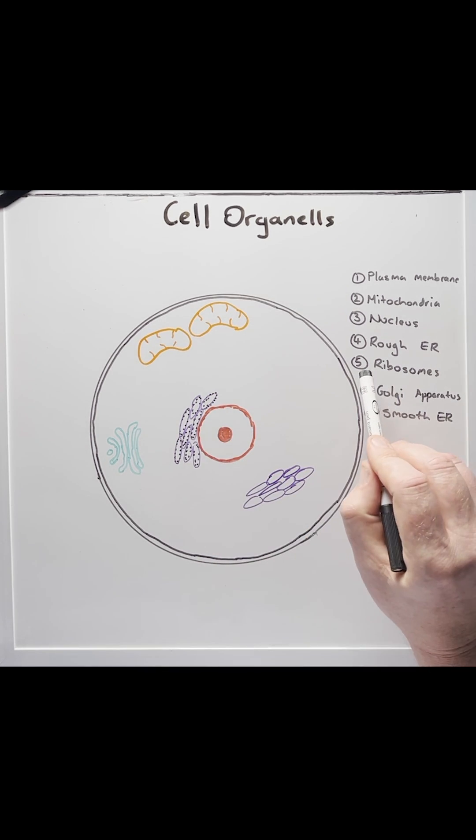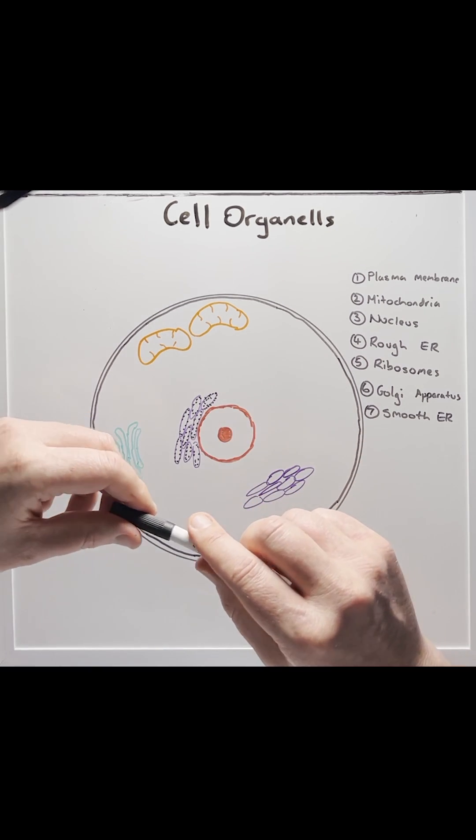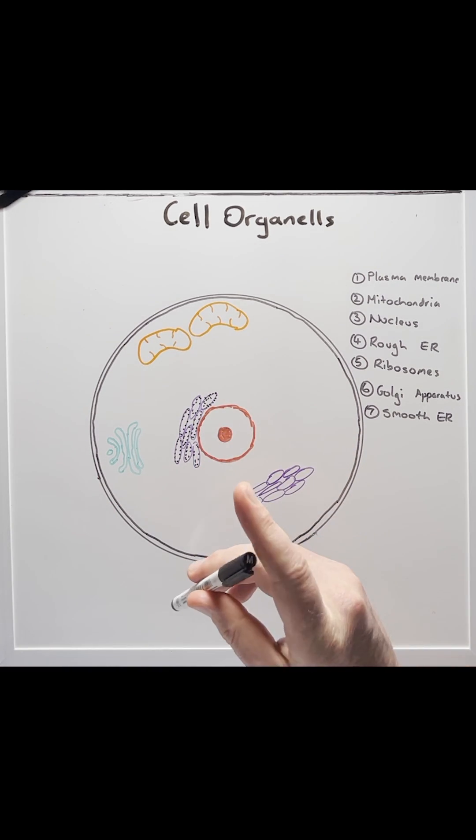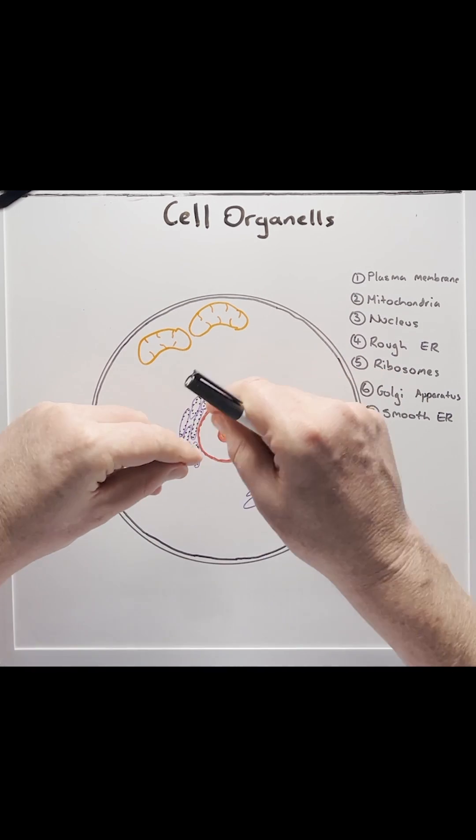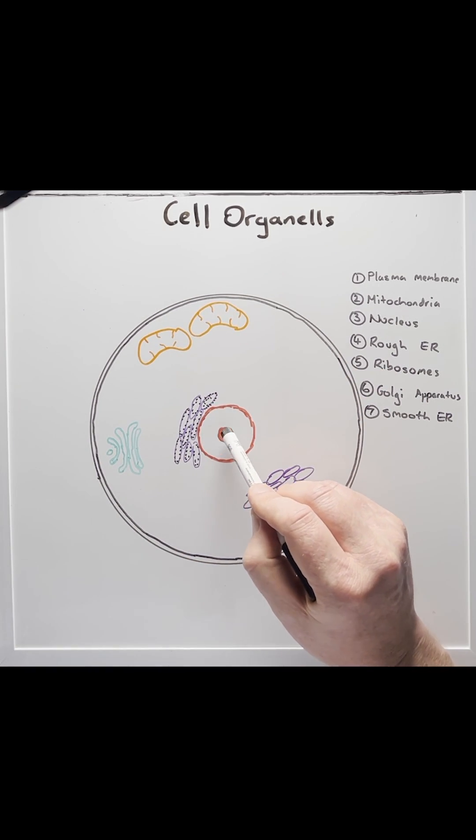But what makes the proteins? Well, it's number five, the ribosomes, which you can see them studded here on the rough ER. This is actually what makes it look rough. So the ribosomes grab amino acids, stack them together, and this is what makes the proteins. The ribosomes are actually made in a special part of the nucleus called the nucleolus.